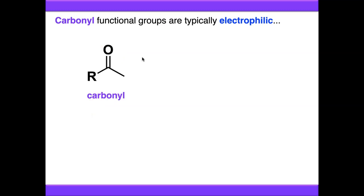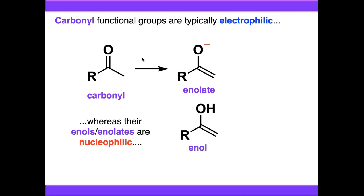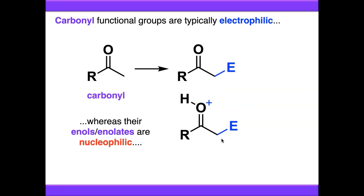We've also seen in the enols and enolates video that you can convert carbonyl compounds which have alpha protons into either their enolates or their enols. And these are nucleophilic, but they're nucleophilic at the alpha carbon, which is the one adjacent to where the carbonyl was originally. So if we take an electrophile and expose our enolate or enol to it, they will attack the electrophile and we'll end up functionalised at the alpha position.